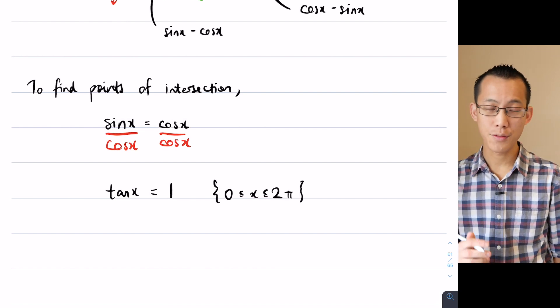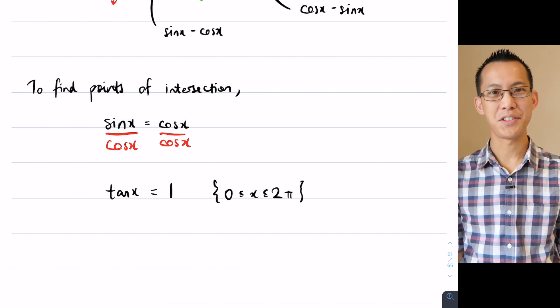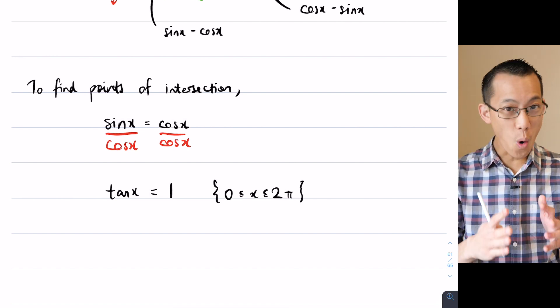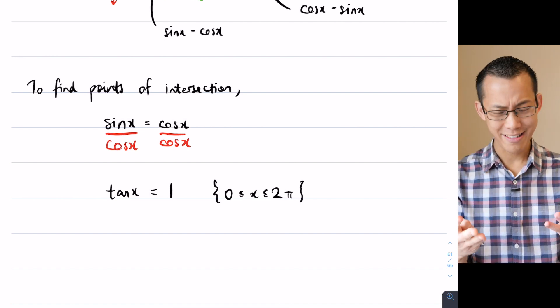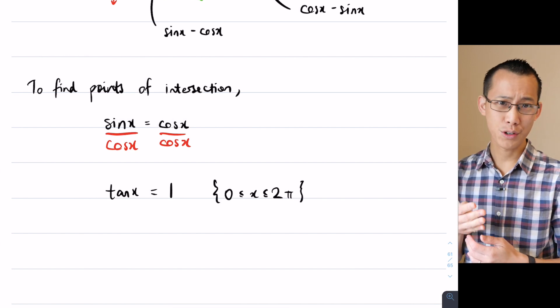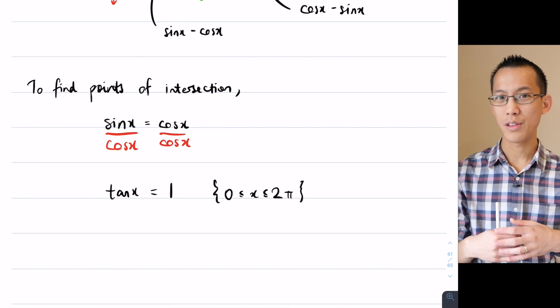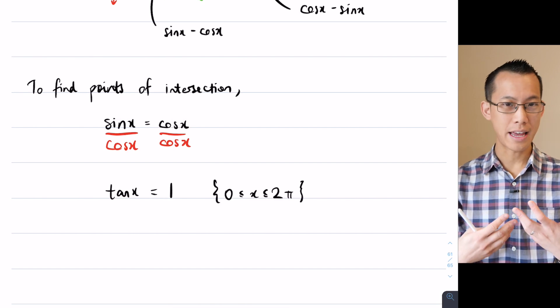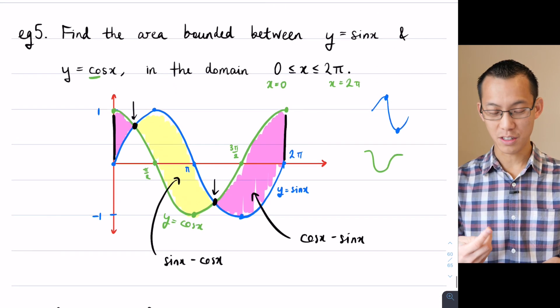So in order to solve this, you've got two alternatives. Number one, you can think back to your exact values if you know them well enough, or if you're in a hurry you can use your calculator to help you out. Your calculator will only tell you one of the solutions, but from that we can work out the other one.